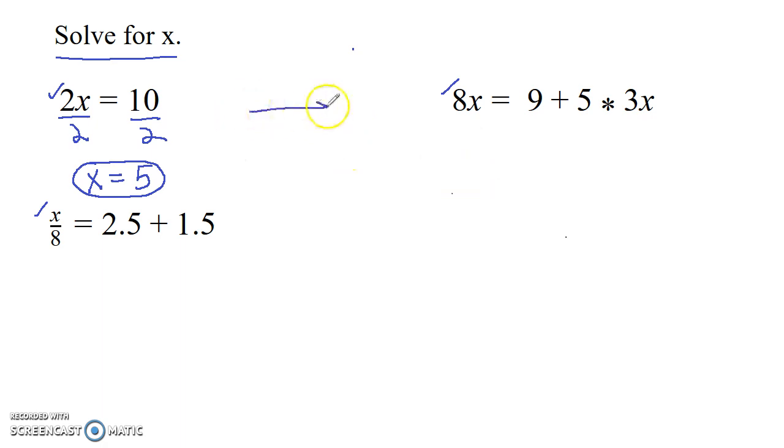Let's go to the second one over here. Solving for X. This one's a little bit trickier. So let's see what we can do. We can probably combine this right here, this multiplication, to make it simpler. So we're going to do that. So we'll have 8X is equal to 9 plus 5 times 3X would give you 15X.